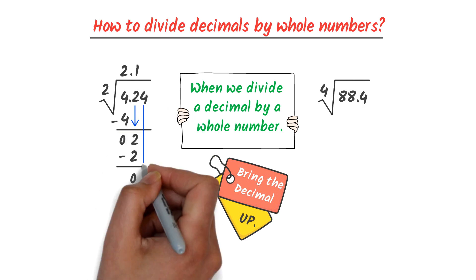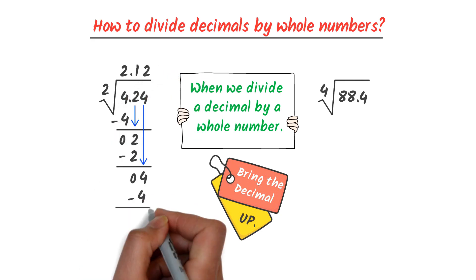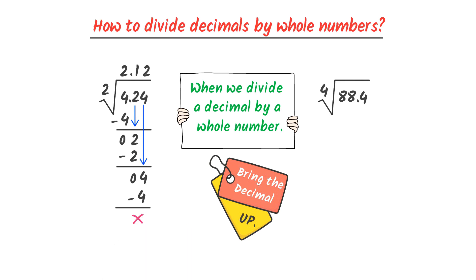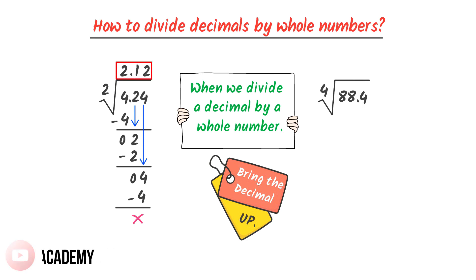Finally, I bring down this 4 here. We know that 2 times 2 is equal to 4, thus 4 minus 4 is equal to 0. Therefore, when we divide 4.24 by 2, we get 2.12. So the answer of this question is 2.12.